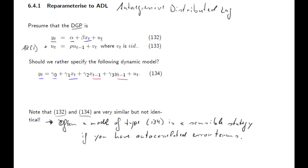I am going to demonstrate why that is the case. Before I continue, I should correct a small thing: the error term in equation 134 should not be the same U_t as in 132. So we are going to change it to W_t. So here we have W_t as the error term. Now I basically want to show that equation 132 in combination with the AR(1) for U_t in equation 133 is very similar to equation 134.